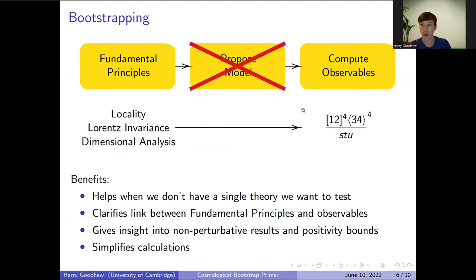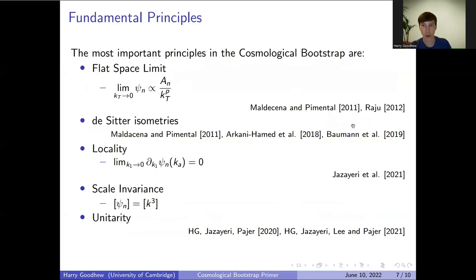What this does is it helps when we don't have a single theory. If we can understand how these principles impose themselves, then any theory that has those symmetries or those properties will have observables in that form. Through its nature it clarifies the link between the fundamental principles and observables and therefore allows us to make some comments about potential higher energy completions of theories. In particular, we can potentially gain some insight into non-perturbative results or even positivity bounds and hopefully learn something about this underlying physics. Finally, as you can see, we've massively simplified this calculation. We've gone from having to calculate all the possible different Feynman diagrams to being able to just write down this single final result, which is much more straightforward.